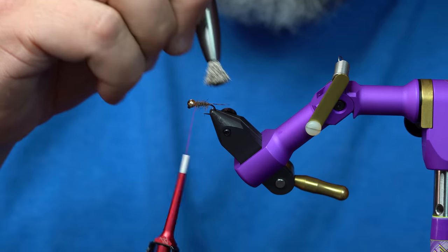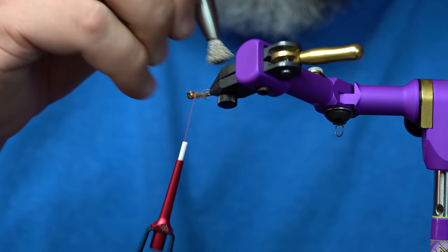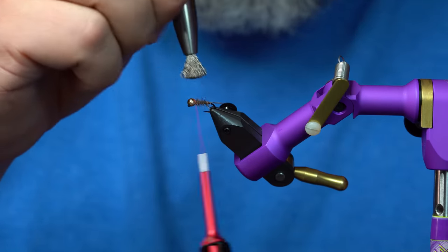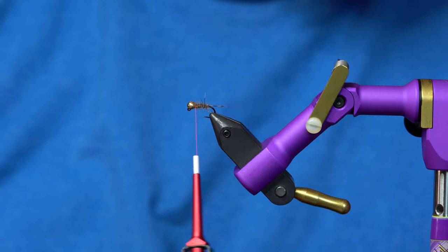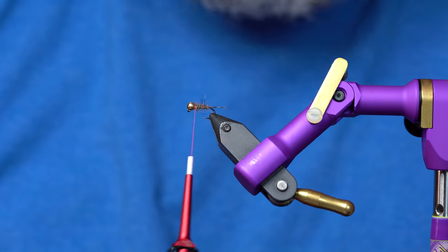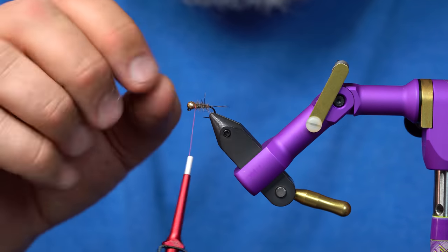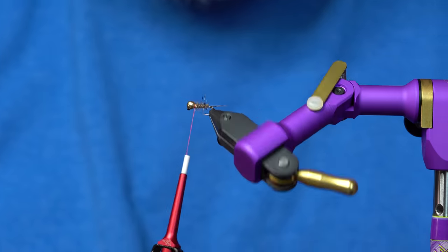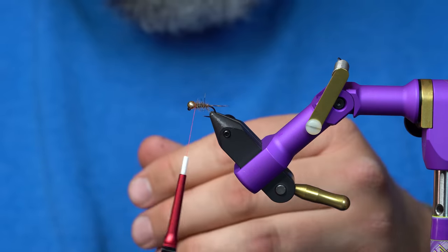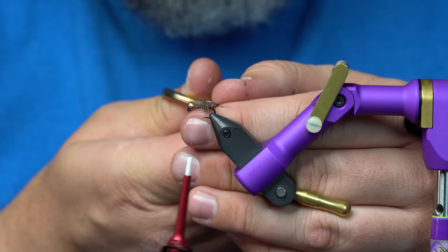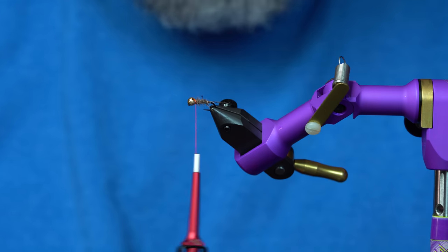It just overall makes a lot more buggy of a nymph. You can see how buggy that is. Those little underfurs from squirrel will really pulsate in the water really well. That's a killer part of this little brush that I like. It's really easy to get that effect of a really full fluffy body.